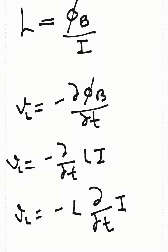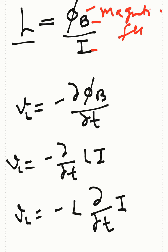Let's add some mathematical derivations to the concept of inductors. Here, L is the inductance, and L equals phi B over I, where phi B is the magnetic flux and I is the current.